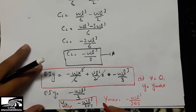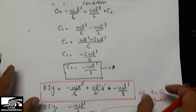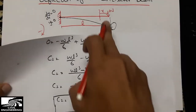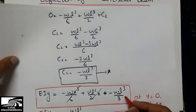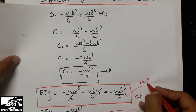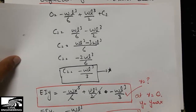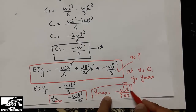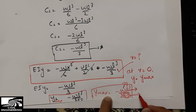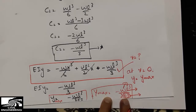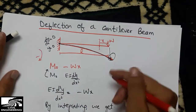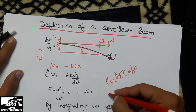So y_max equals minus WL³ divided by 3EI. We can find the maximum deflection by this formula when the load is a concentrated load at the free end. Here W is the concentrated load, L is the length of the beam, I is the moment of inertia, and E is the modulus of elasticity of the material. Please subscribe our channel for more civil engineering videos. Thank you.